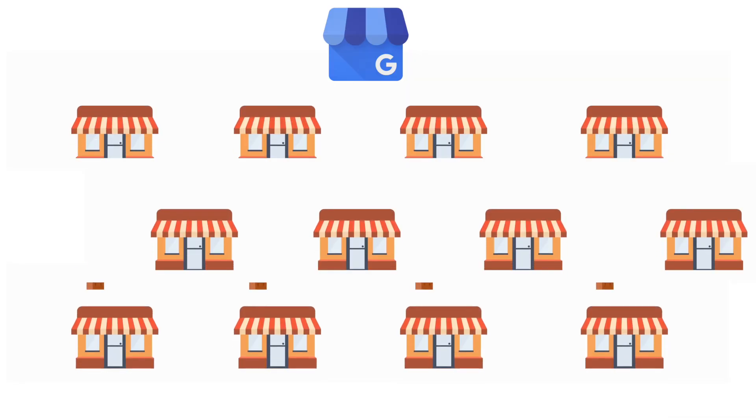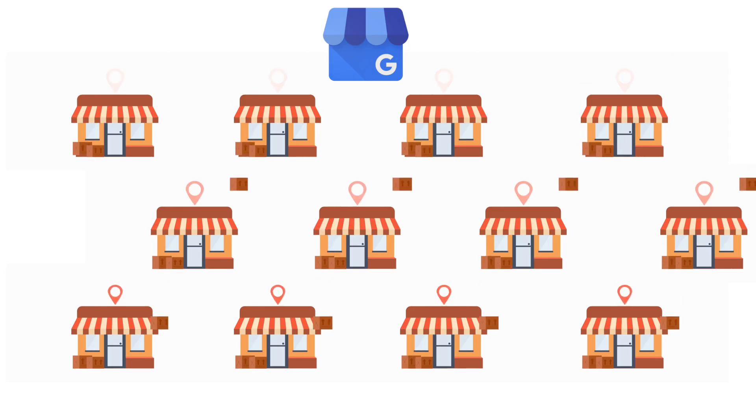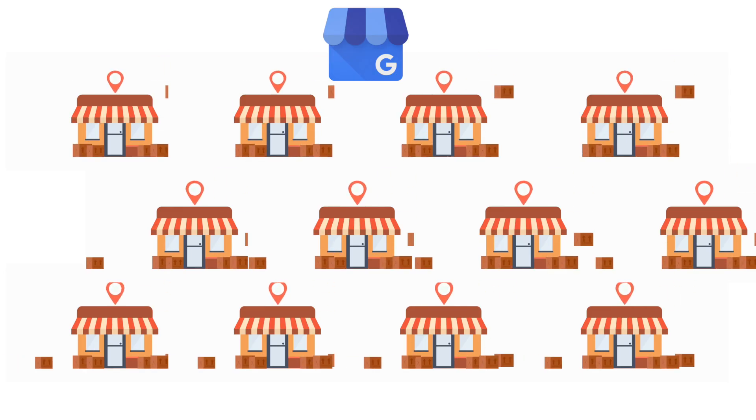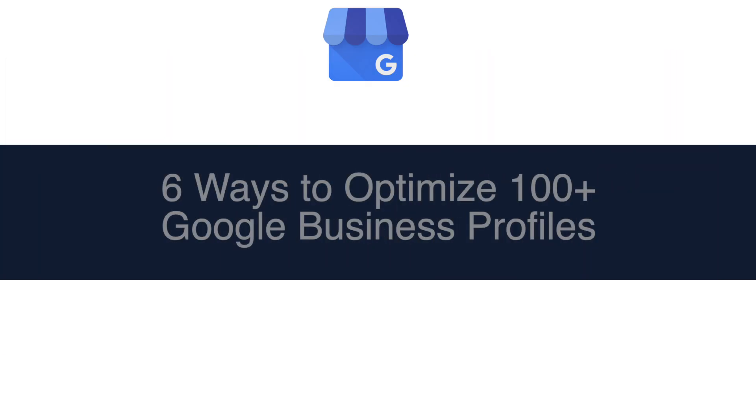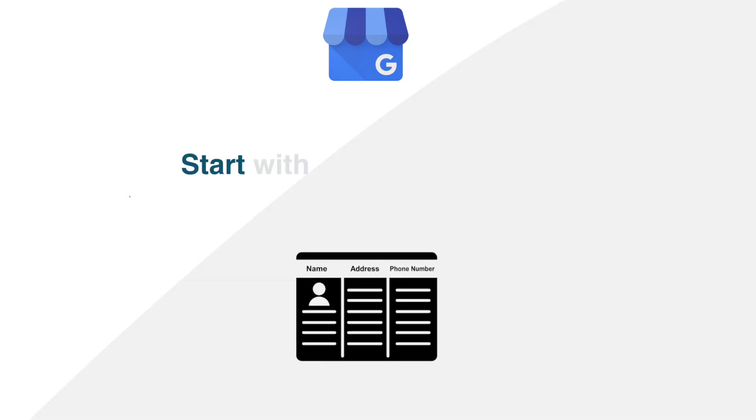If you're a multi-location business owner or marketer and you want to optimize 100 or more Google Business Profiles and URLs at scale, then this video is for you. Here are six things you can do to have success.